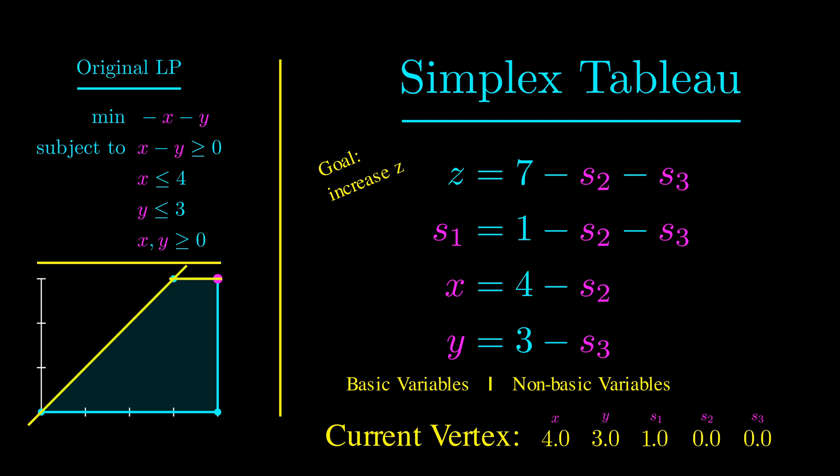Could we have traveled along the upper path instead? In fact, we could have. Let's go back to our original tableau, which corresponded to the vertex at the origin, with x and y as non-basic. Previously, we increased x, but what happens when we increase y instead? We can't increase y at all because any small amount will make s1 negative.